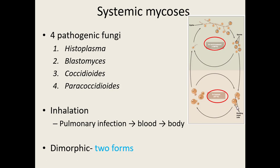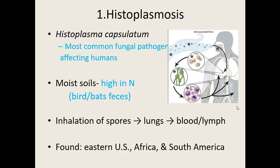The most common Histoplasma that causes issues in humans is Histoplasma capsulatum — the most common fungal pathogen affecting humans. It's found in moist soils with high nitrogen content from bird and bat feces, such as caves or areas with large concentrations of birds. We pick it up through inhalation; the spores get into the lungs and can travel throughout the blood and lymph, affecting different parts of the body.